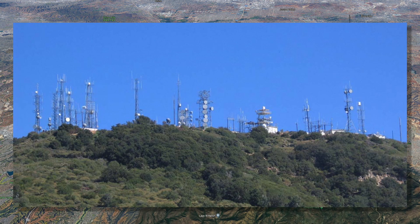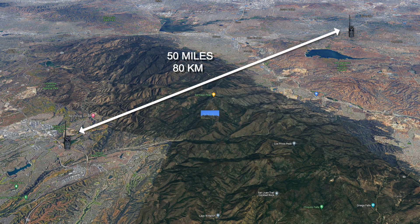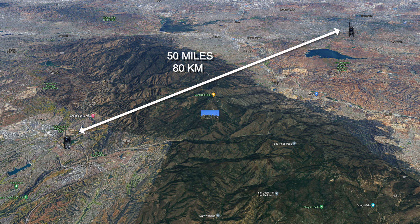Today we're going to take a look at how to set up your radio to operate through a radio repeater. A repeater is a radio relay station that is typically located on a high structure or mountaintop and extends the range that two or more radios can talk. It does that by receiving your signal and retransmitting it in real time.